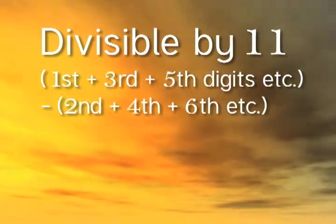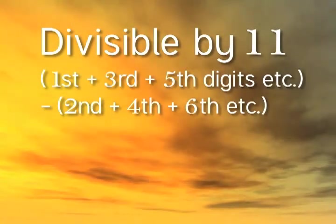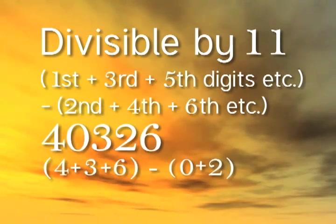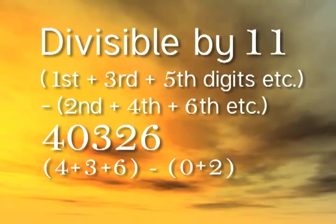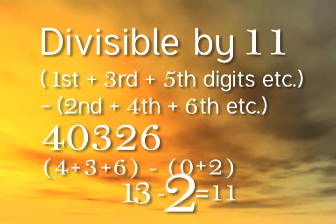Add together the 1st and 3rd and 5th digits, etc., and subtract the 2nd plus the 4th, etc. For example, 40,326. That's 4 plus 3 plus 6 minus 0 plus 2, and that equals 11.